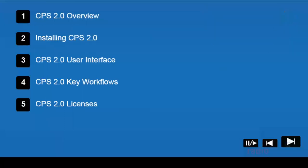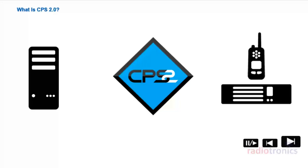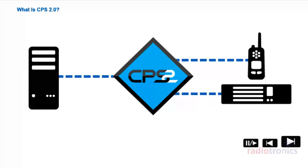Welcome to Module 1. In this module, we will provide you with an overview of MotoTurbo CPS 2.0. MotoTurbo Customer Programming Software, CPS 2.0, provides a programming interface between a PC and MotoTurbo radios and repeaters. It enables you to easily program the devices using code plugs and manage their software updates.